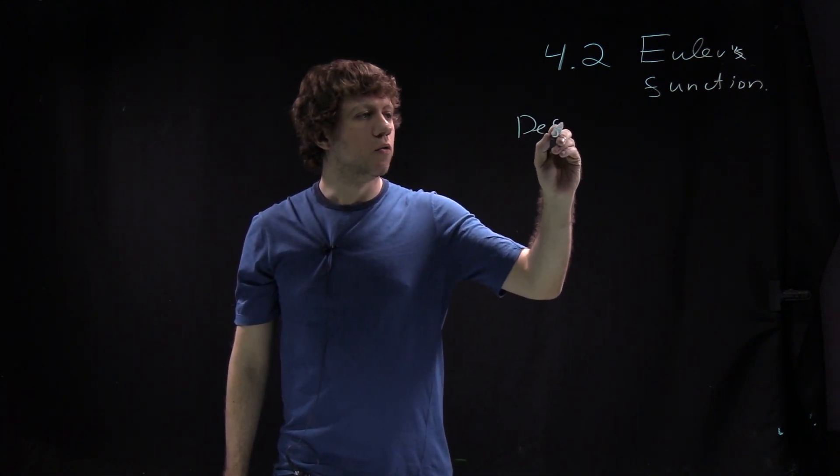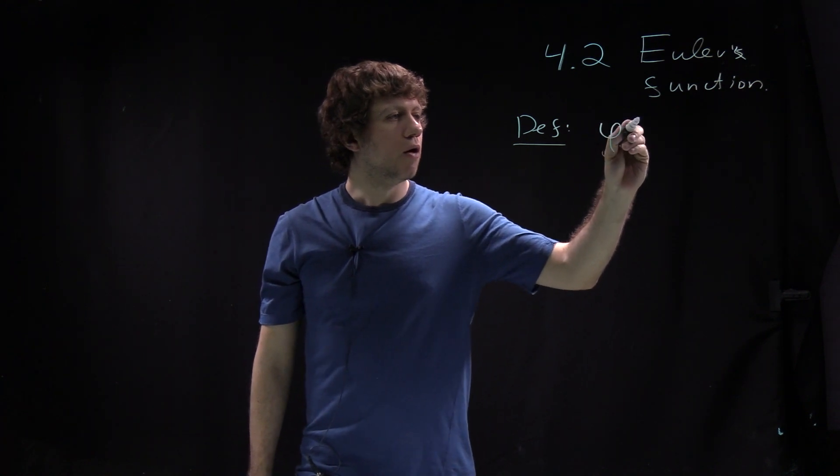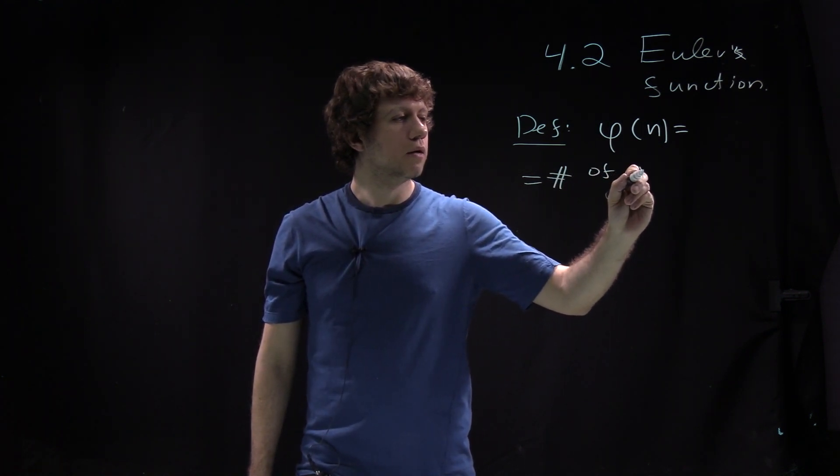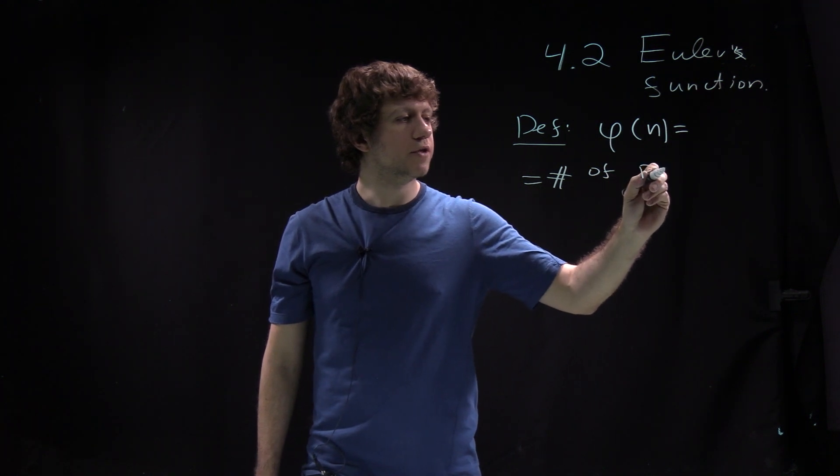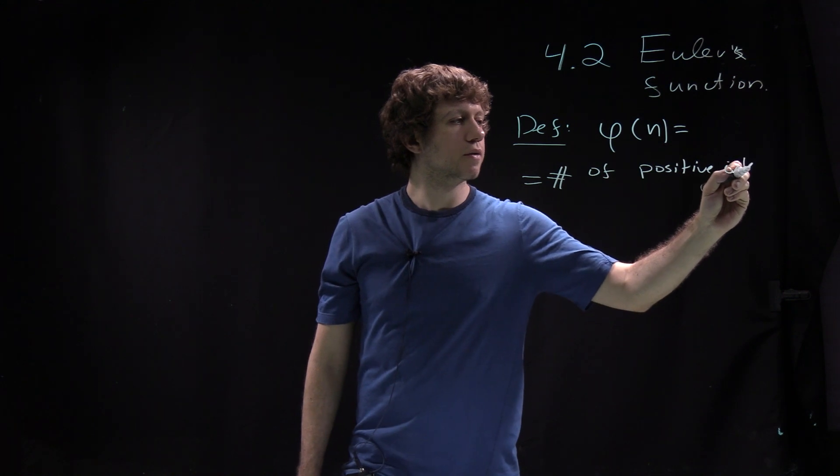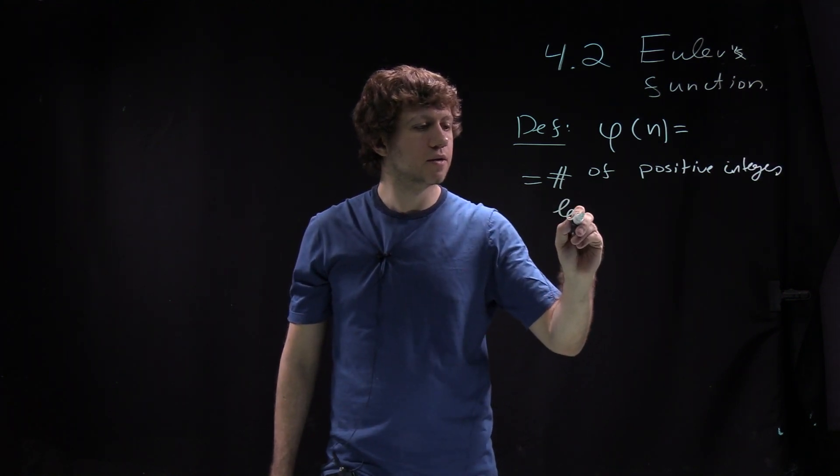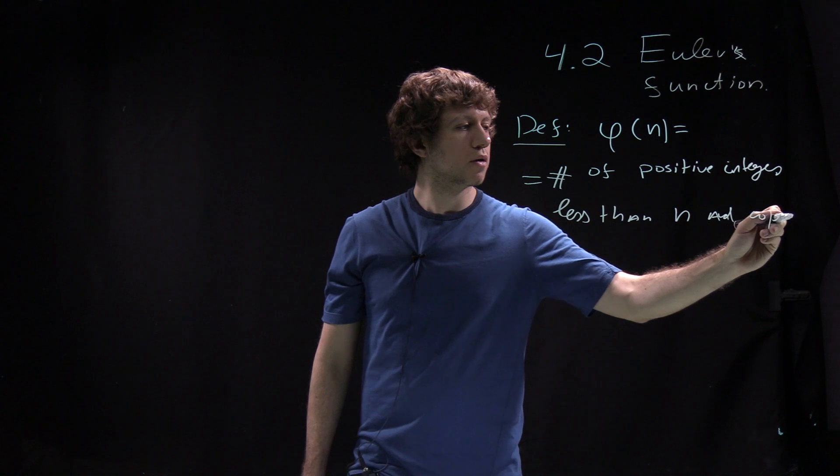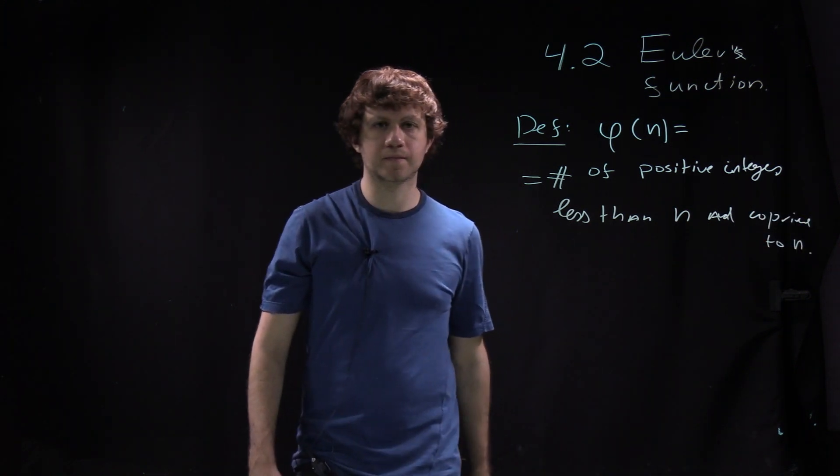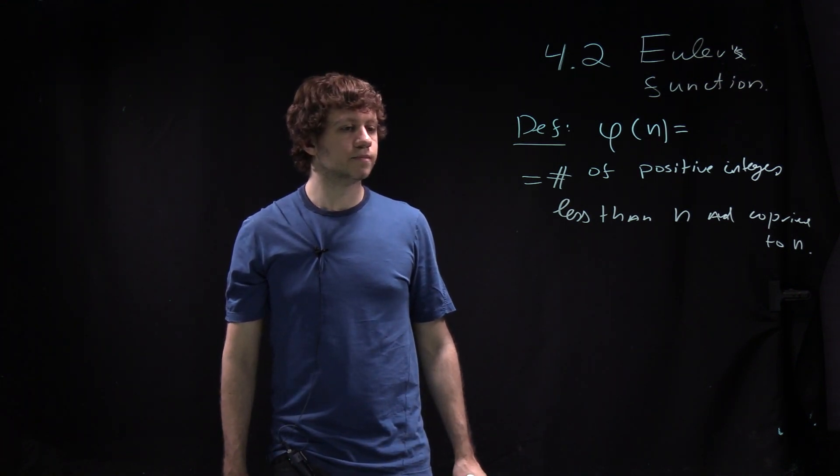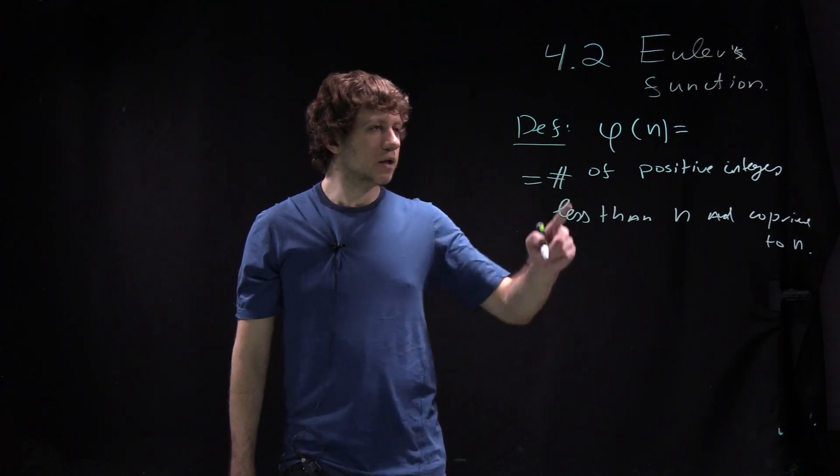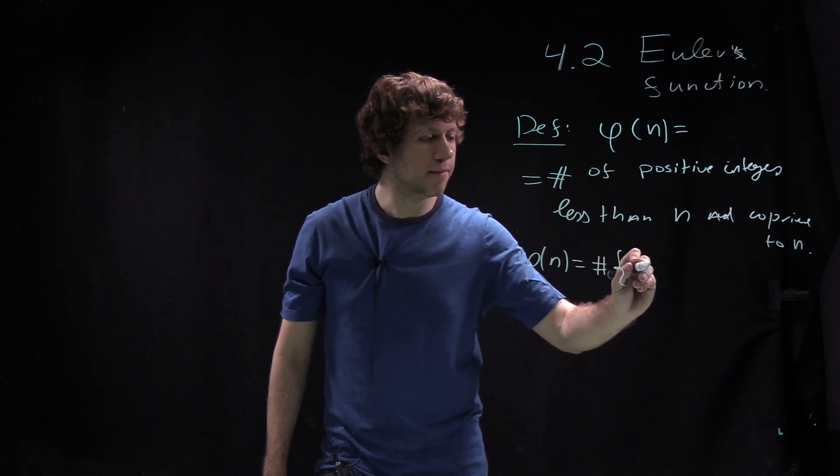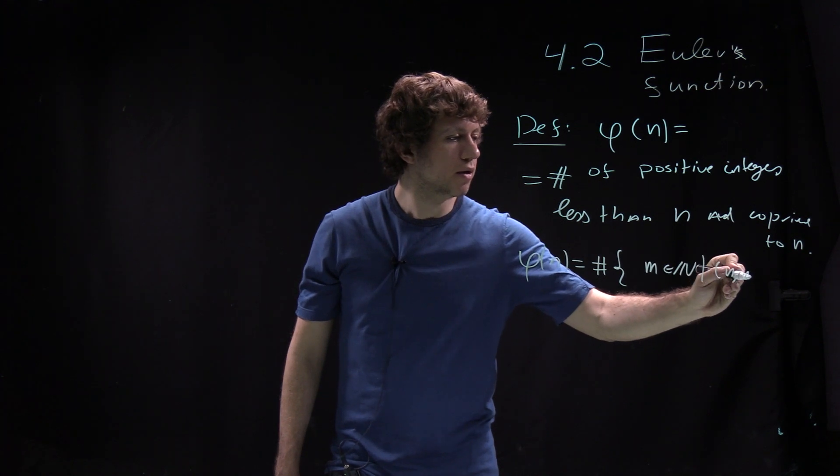Euler function is a very fundamental notion in elementary number theory. Euler function phi of n is defined as the number of positive integers less than n and co-prime to n. We can restate this as phi of n equals the cardinality of the set of m in n such that n and m are co-prime.